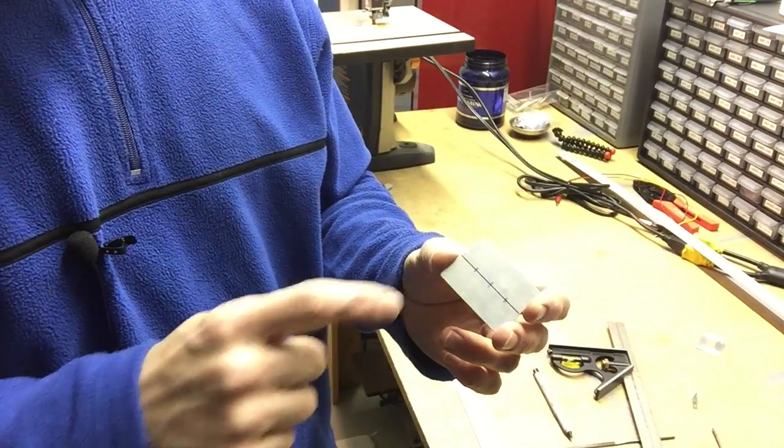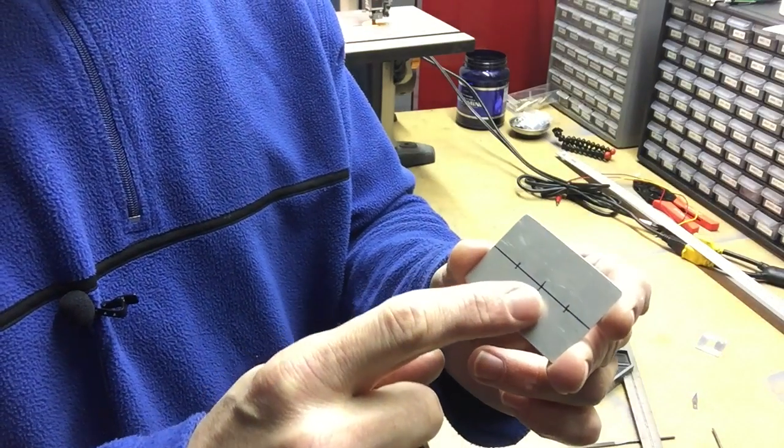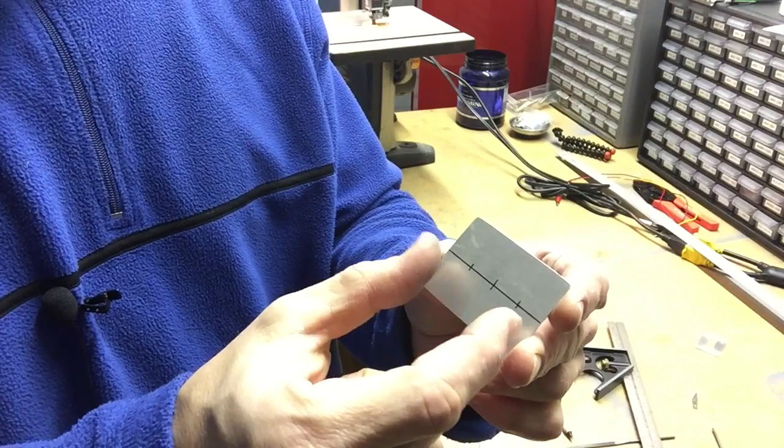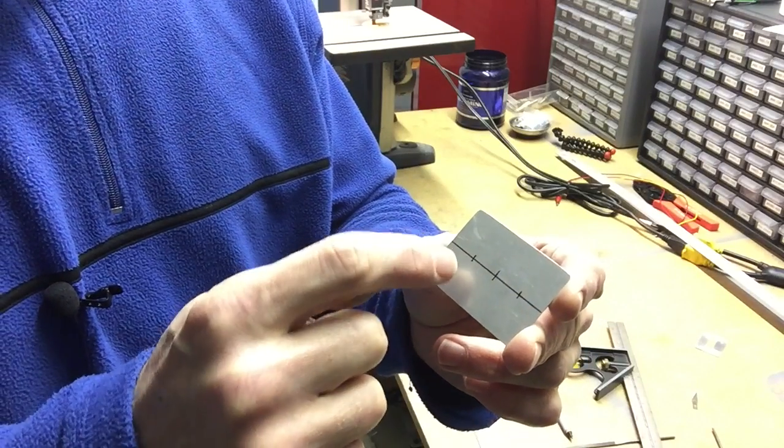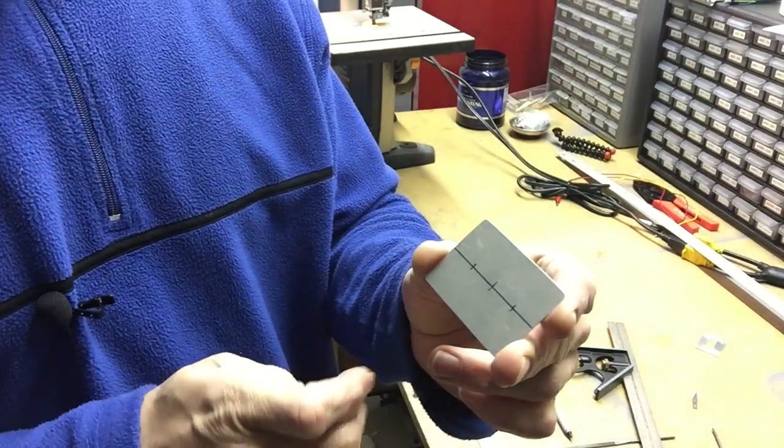Alright, to cut this slot you can see I've made a line down the center and there's three little marks on here. That center one is just the center of it, and these two are an inch apart. I'm going to drill a three-eighths hole at each of those points and then cut the slot out in the middle.